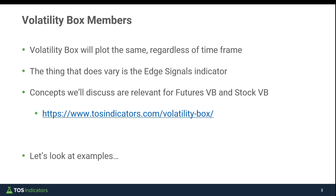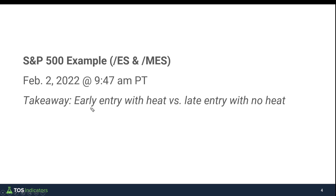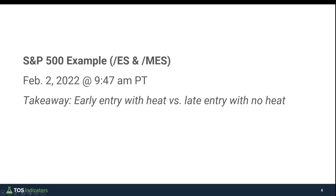With that introduction out of the way, let's start by looking at some examples. The first is in the S&P 500, using either the micro or full-size futures contract — ES or MES. The trade setup took place on February 2, 2022, and the breach happened at 9:47 a.m. Pacific time. My goal with this example is to show how an early entry can sometimes lead to dealing with a little heat on the trade versus a later entry that avoids that heat but loses the benefit of being early.